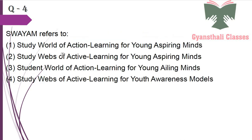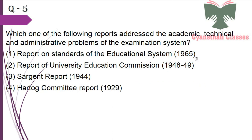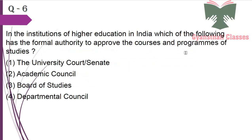Next question: SWAYAM refers to — it refers to Study Webs of Active Learning for Young Aspiring Minds, so the answer is B. Next question: Which one of the following reports addresses the academic, technical and administrative problems of the examination system? It was addressed in the Report on Standard of Educational System, 1965.